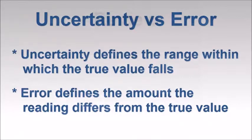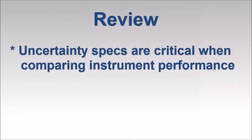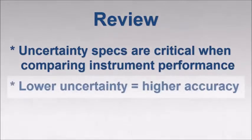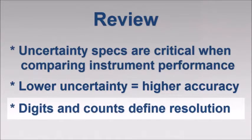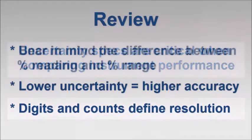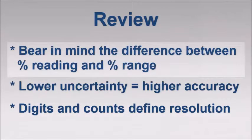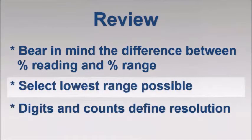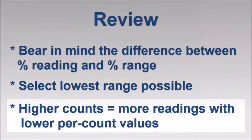Let's review a few key points we've covered. It's important to understand uncertainty specification to properly determine an instrument's accuracy. The lower the uncertainty, the higher the accuracy. Digits and counts define an instrument's resolution, but not its accuracy. When comparing performance, bear in mind whether the instrument's uncertainty is based on percentage of reading or percentage of range. Be sure to select the optimal range, generally the lowest possible, when making a measurement. And finally, higher count instruments can produce more readings with lower uncertainties than low-count instruments.